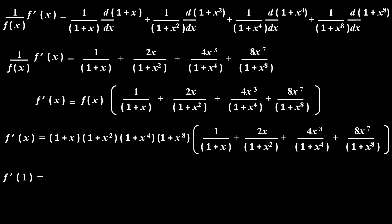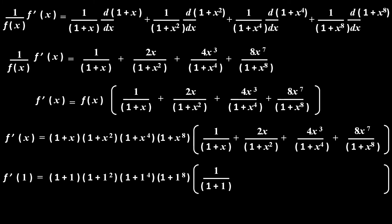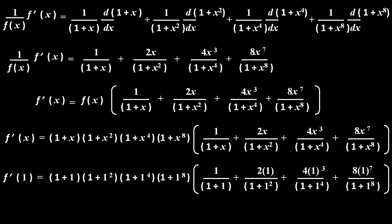Now we have to find the value of f'(1), means we have to replace variable x by 1 in the above derivative function. So in the right hand side, replacing x by 1 we get: (1+1)(1+1²)(1+1⁴)(1+1⁸) × [1/(1+1) + 2(1)/(1+1²) + 4(1³)/(1+1⁴) + 8(1⁷)/(1+1⁸)].